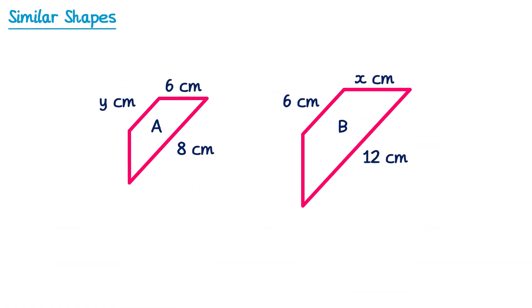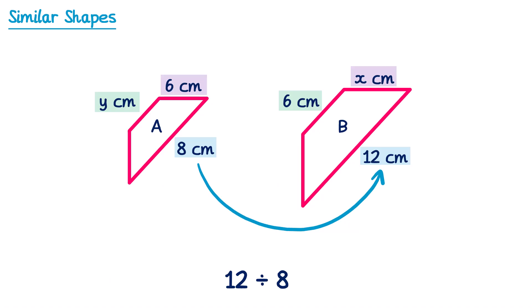Let's try another example. We have two shapes A and B. On the right-hand side I've got an 8 and a 12, on the top a 6 and an X, and on the left a Y and a 6. The only pair I have both values for is the 8 and 12. To work out what we multiply 8 by to get 12, I do 12 divided by 8, which gives 1.5. So the scale factor from A to B is 1.5. I can work out X by doing 6 multiplied by 1.5, which gives 9.